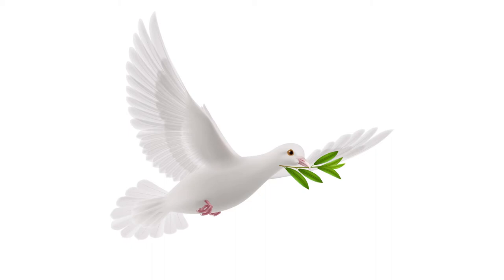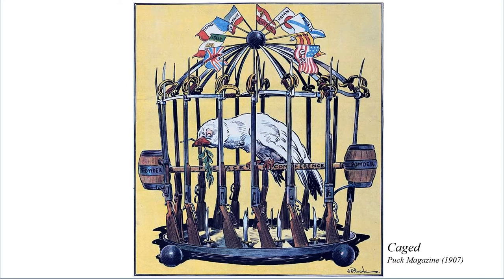Cartoonists use symbols to present complex ideas or values. For example, a dove with an olive branch in its beak is used to represent peace. In this cartoon from 1907, the cartoonist wanted to poke fun at the World Peace Conference taking place at The Hague. The dove, symbolising peace, is caged by rifles. It sits on a perch with barrels of gunpowder at either end and the flags of the major powers above.